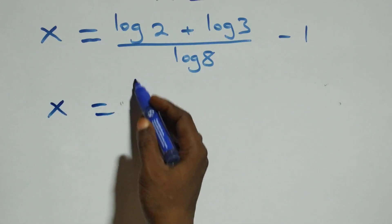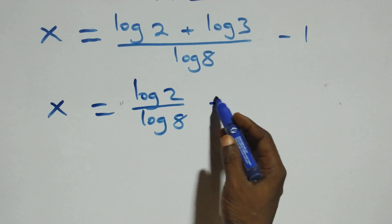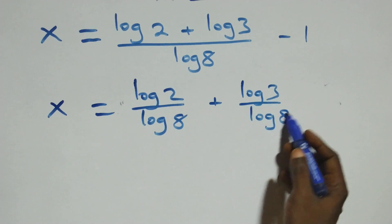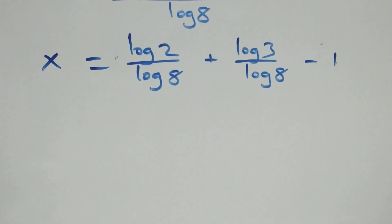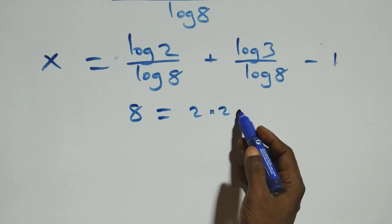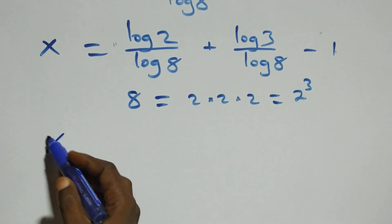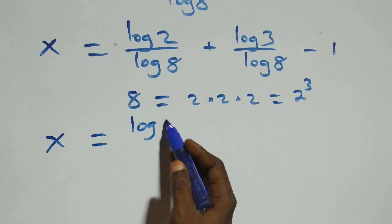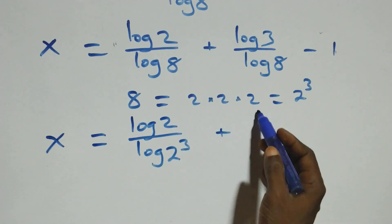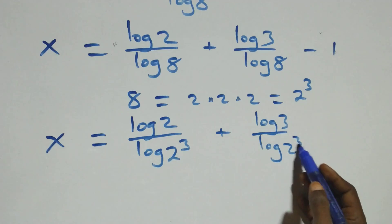We separate this into two fractions. So we have x equals log 2 over log 8 plus log 3 over log 8, minus 1. Also, we can express 8 as 2 times 2 times 2, which is the same thing as 2 cubed. So here we have x equals log 2 over log 2 cubed plus log 3 over log 2 cubed, minus 1.